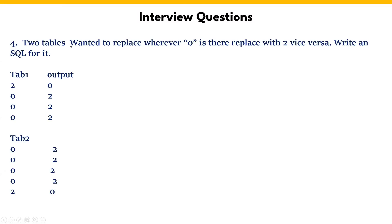So here, in two tables we have wanted to replace where zero is there — replace with two, and vice versa. So let's get into the SQL query directly for this.